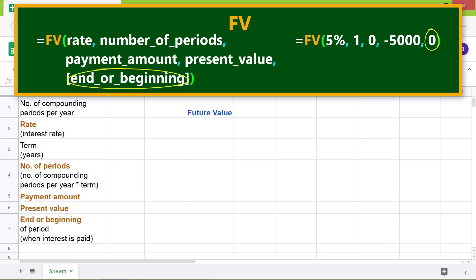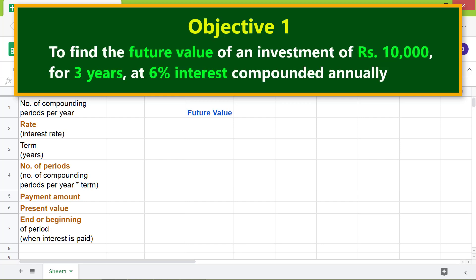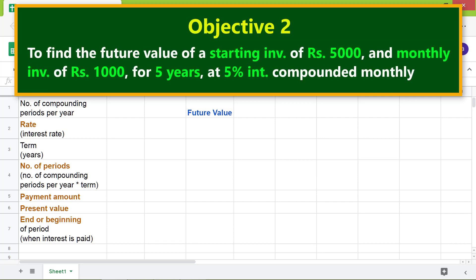If this attribute is omitted, zero is used as the default. Moving forward, here are the objectives for using the FV function: to find the future value of an investment of rupees 10,000 for three years at 6% interest compounded annually; to find the future value of a starting investment of rupees 5,000 and monthly investments of rupees 1,000 for five years at 5% interest compounded monthly.